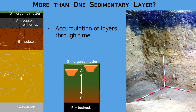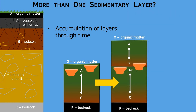Later, if a new sedimentary unit starts to accumulate over the site, then the soil formation process will begin again, and with new conditions. The older soil profile becomes buried, and its O horizon no longer exists. Now, different artifacts may be deposited simultaneously with the accumulation or buildup of the new sedimentary layer, and eventually a new soil profile will develop with its own internal horizons.